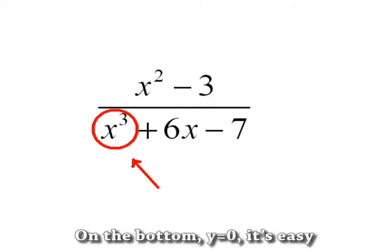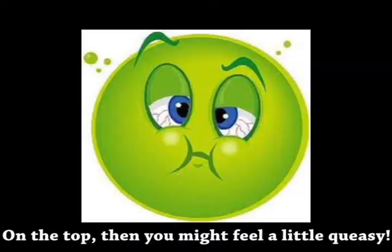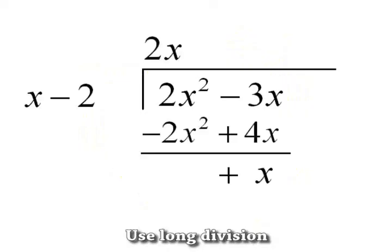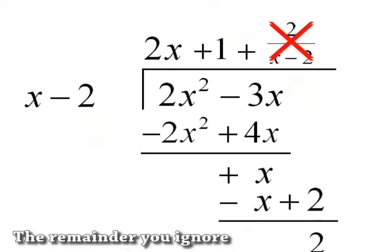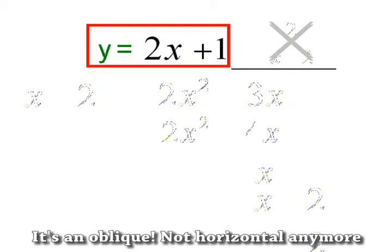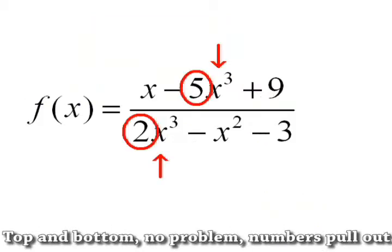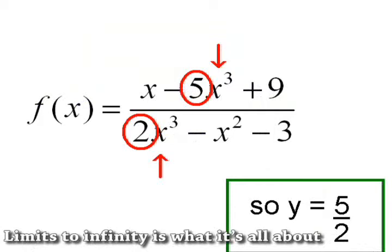On the bottom, y equals zero, it's easy. On the top, then you might feel a little queasy. Use long division, the remainder you ignore. It's an oblique, not horizontal anymore. Top and bottom, no problem, numbers pull out. Limits to infinity's what it's all about.